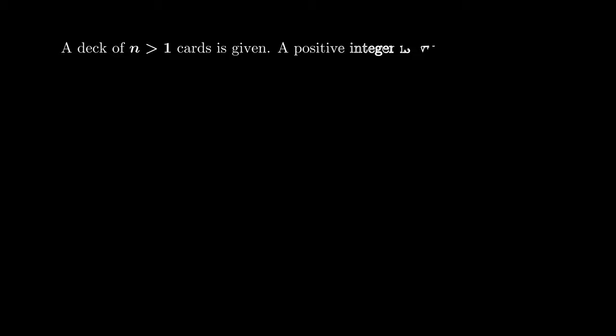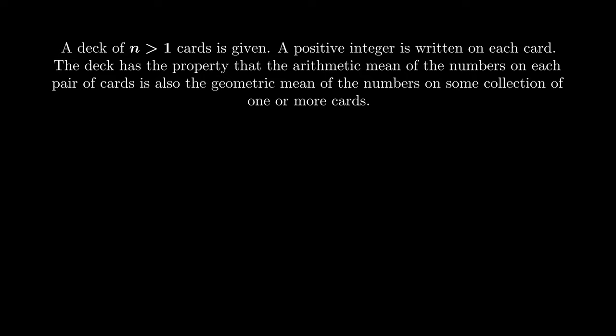We are given a deck of n cards where a positive integer is written on each card. The deck has the following property that the arithmetic mean of the numbers on each pair of cards is also the geometric mean of the numbers on some collection of one or more cards. The question is to determine for which number n does it follow that the numbers on the cards are all equal.